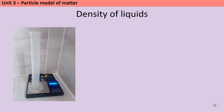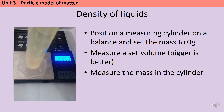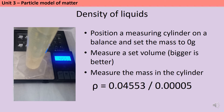Liquids don't have a fixed shape but they do have a fixed volume, so we can also calculate their density. You're going to need a balance and also a measuring cylinder. Firstly you put the measuring cylinder onto the balance and set the mass to zero. Then you measure a set volume — it's always good to measure as large a volume as possible as this will make you the most accurate. Then you measure the mass of the liquid using the balance. In this instance I measured out 50 centimeters cubed of oil and the mass was 45.53 grams, giving a density of 0.04553 divided by 0.00005, which equals 906.6 kilograms per meter cubed. This makes sense because oil is slightly less dense than water, which has a density of 1,000.